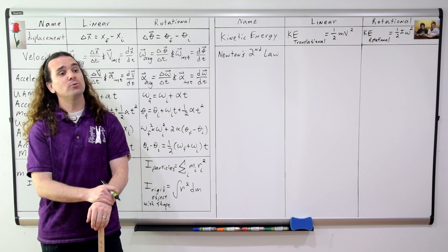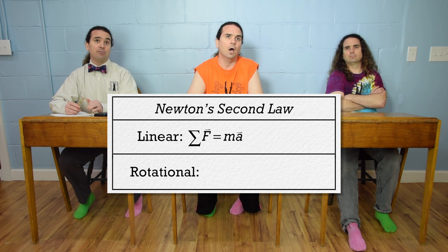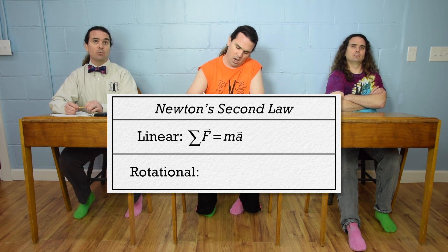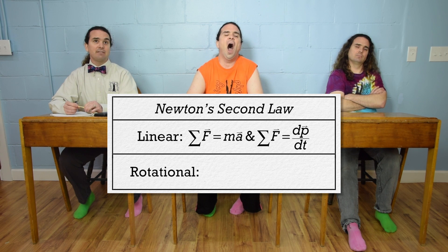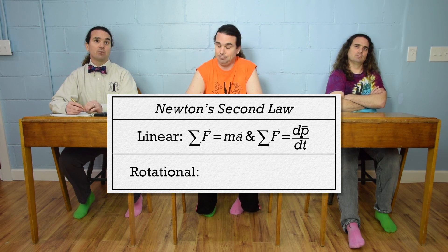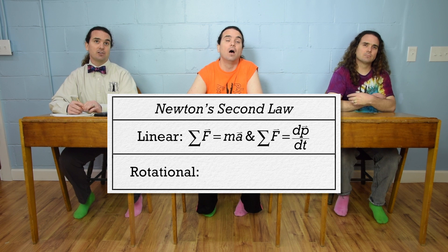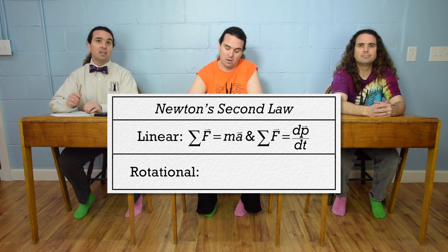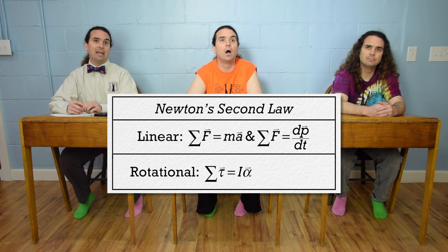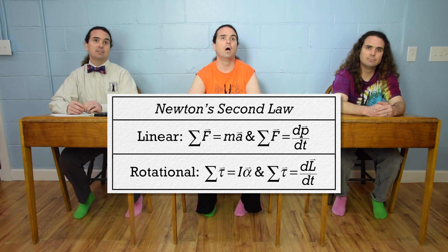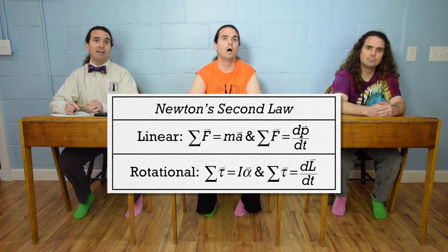Billy, how about Newton's second law? Net force equals mass times acceleration, where force and acceleration are vectors. There is also net force equals the derivative of momentum with respect to time, where momentum is a vector. Then there is the rotational form of Newton's second law: net torque equals moment of inertia times angular acceleration, and net torque also equals the derivative of angular momentum with respect to time. And torque, alpha, and angular momentum are all vectors.